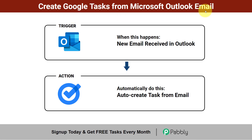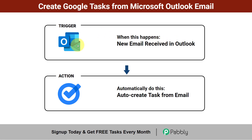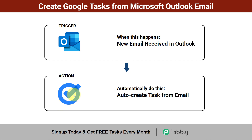How to create Google Tasks from Microsoft Outlook email automatically. Let's say you are receiving a lot of emails in your Outlook account, including product-related queries or requests, and you are missing those important emails because your inbox is full. Here I'm going to show you that whenever a new email is received in your Outlook account, how you can filter out those important emails and create a task from that email in Google Tasks, so you will not miss any important email.